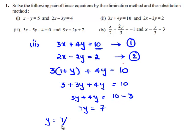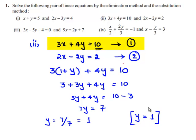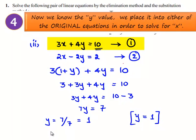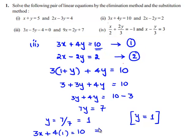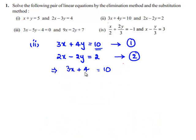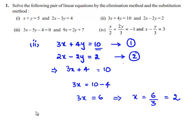So 3y plus 4y is 7y, which equals 10 minus 3, that is 7. So y can be written as 7 divided by 7, that is 1. Finally, we have obtained the value of y to be 1. Now, in order to find the value of x, substitute y is equal to 1 in equation number 1: 3x plus 4 times 1 is equal to 10, so 3x plus 4 is equal to 10. Transposing 4 to the right hand side gives 3x equal to 6, which implies x is equal to 6 divided by 3, that is 2.